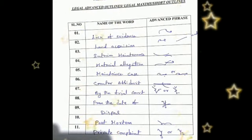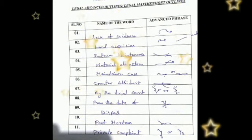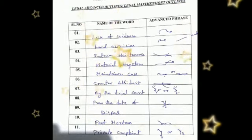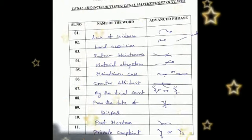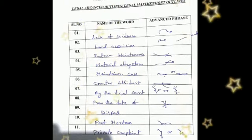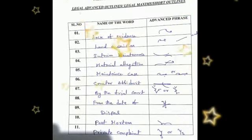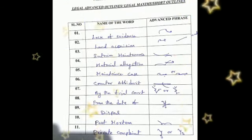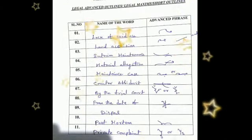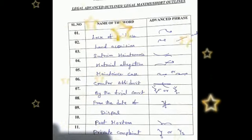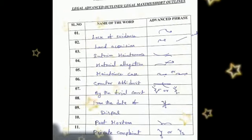The first legal word is 'lack of evidence.' The outline of the word is L above the line, then K, and thereafter V and small circles.